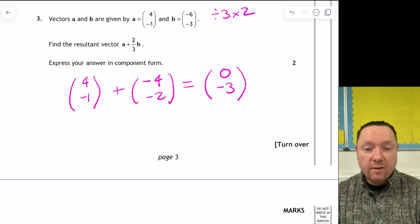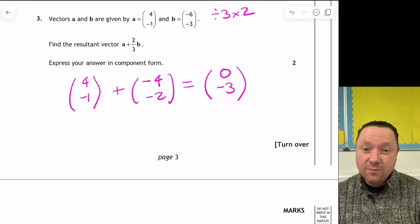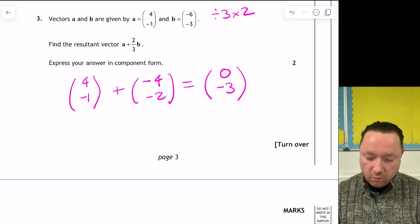So the resultant is 0 minus 3. It always says component form at National 5 Maths. That is it.